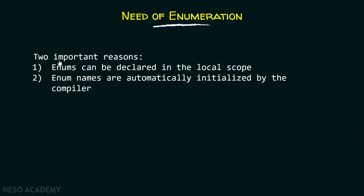There are two important reasons why we are using enums. First, enums can be declared in the local scope. Second, enum names are automatically initialized by the compiler. These two reasons are enough to understand why we are using enums.